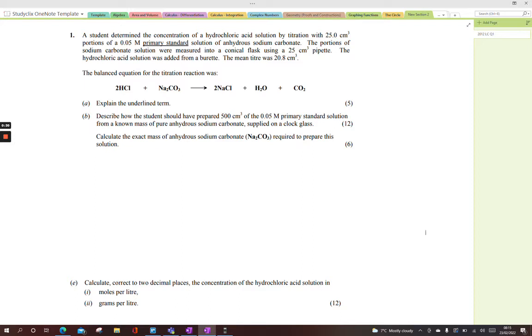The first step is to prepare your standard solution from a primary standard of anhydrous sodium carbonate. Then, since we know its concentration accurately, we use it to determine the concentration of hydrochloric acid. In this we use methyl orange as our indicator, and the color change is yellow to peachy pink.